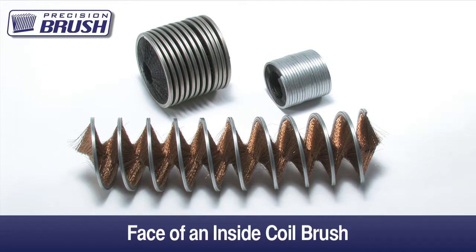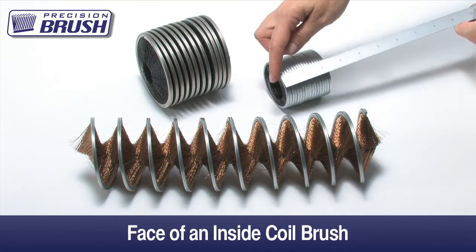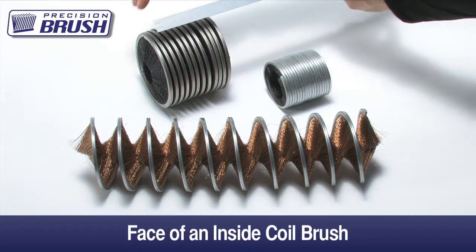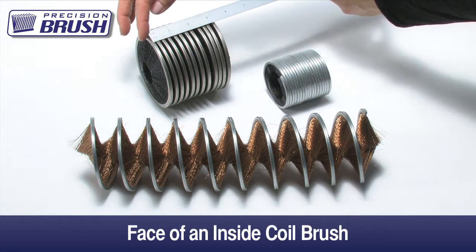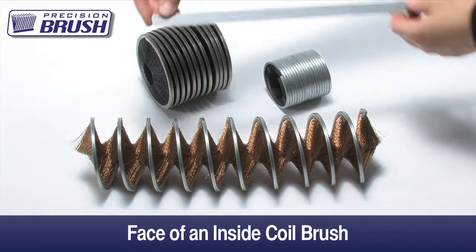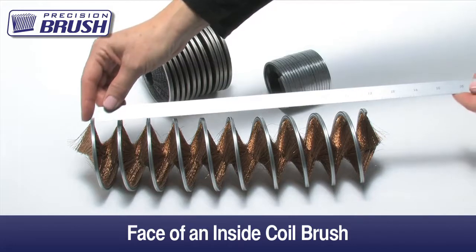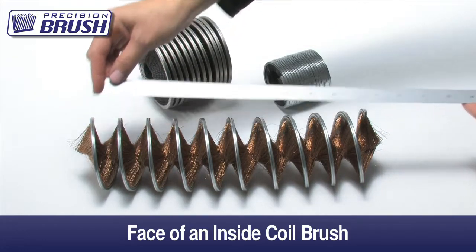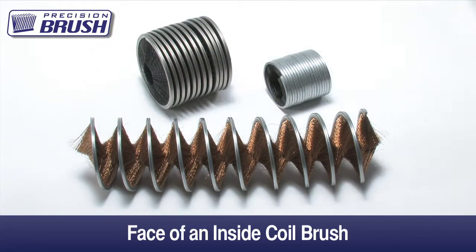Sizing the face or length of inside coil brushes can be tricky. Sometimes the critical dimension would be the maximum number of loops in a compressed state, sometimes it's considered the natural relaxed state of the brush, and sometimes the brush is stretched out to a certain number of loops, similar to an open wound coil brush.